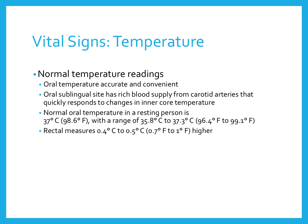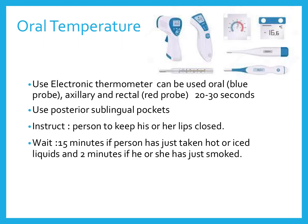Rectal measurements will be about a half to one degree higher than oral. We can use an electronic thermometer — those are your digital ones — which can be oral, axillary, or rectal. Rectal probes are usually red and can take up to 30 seconds to read. For oral temperatures, we use the posterior sublingual pocket, keep the patient's lips closed around the thermometer, and wait 15 minutes if the patient has had liquids or at least 15 to 30 minutes after smoking before taking vital signs.